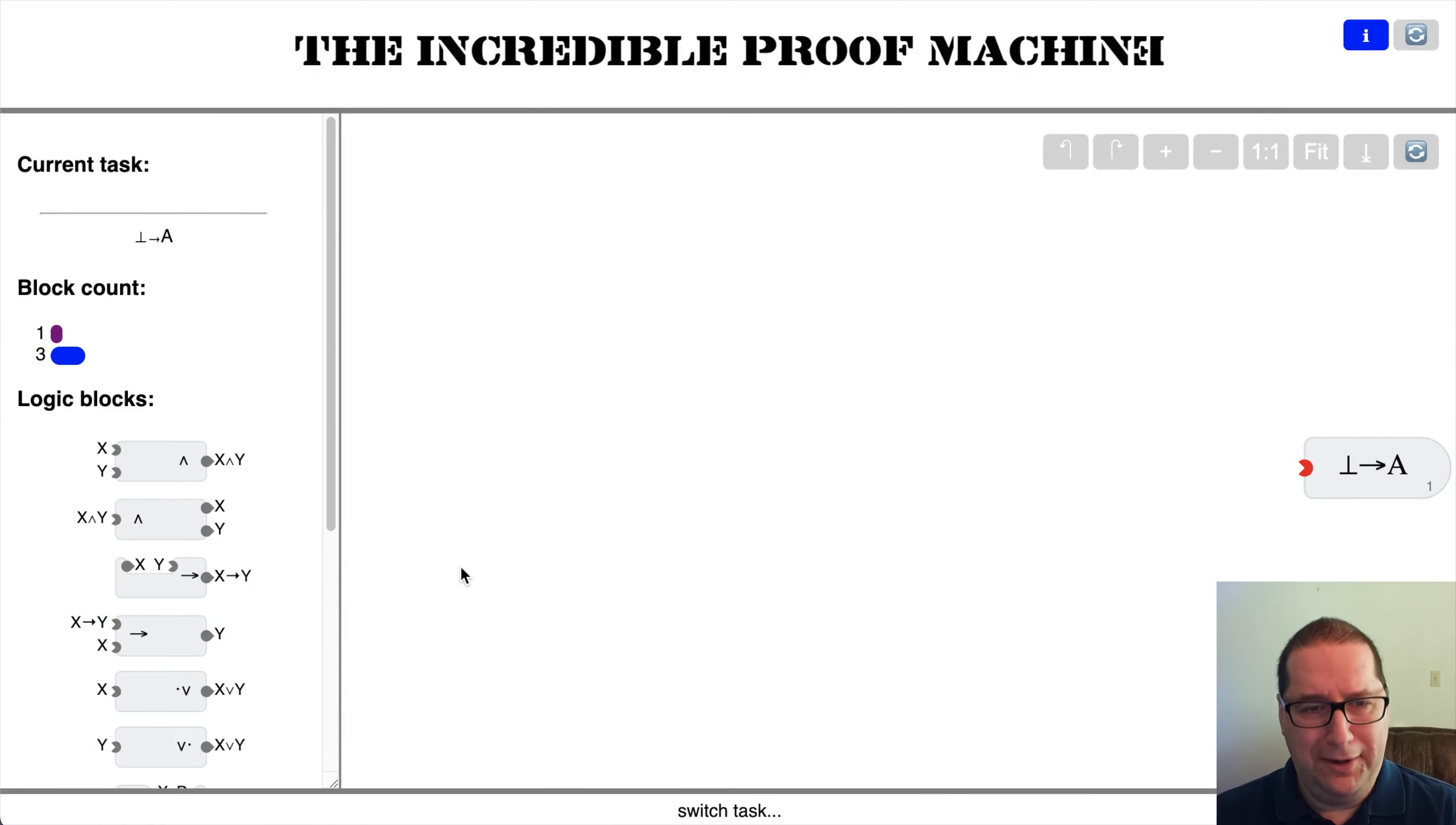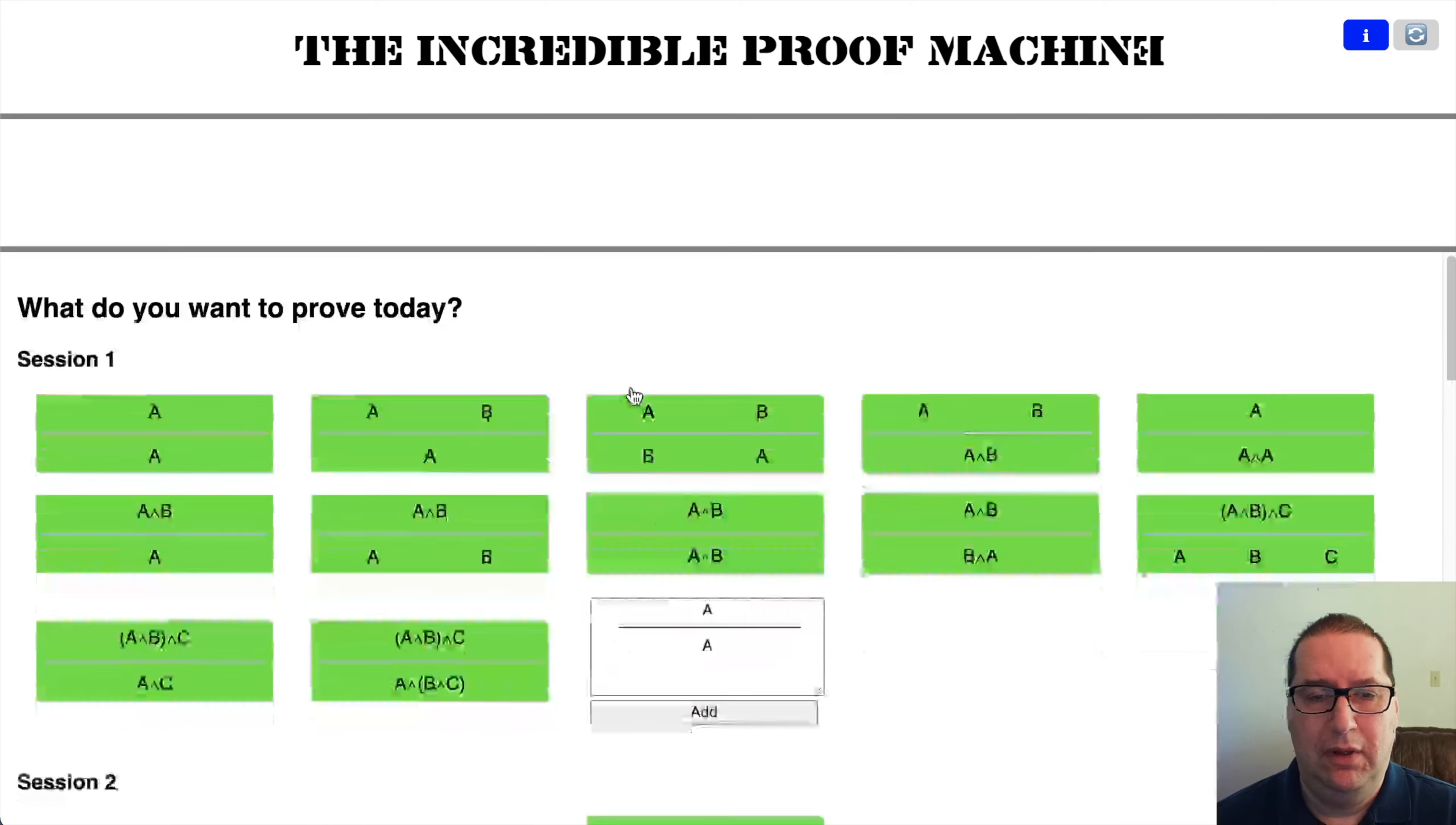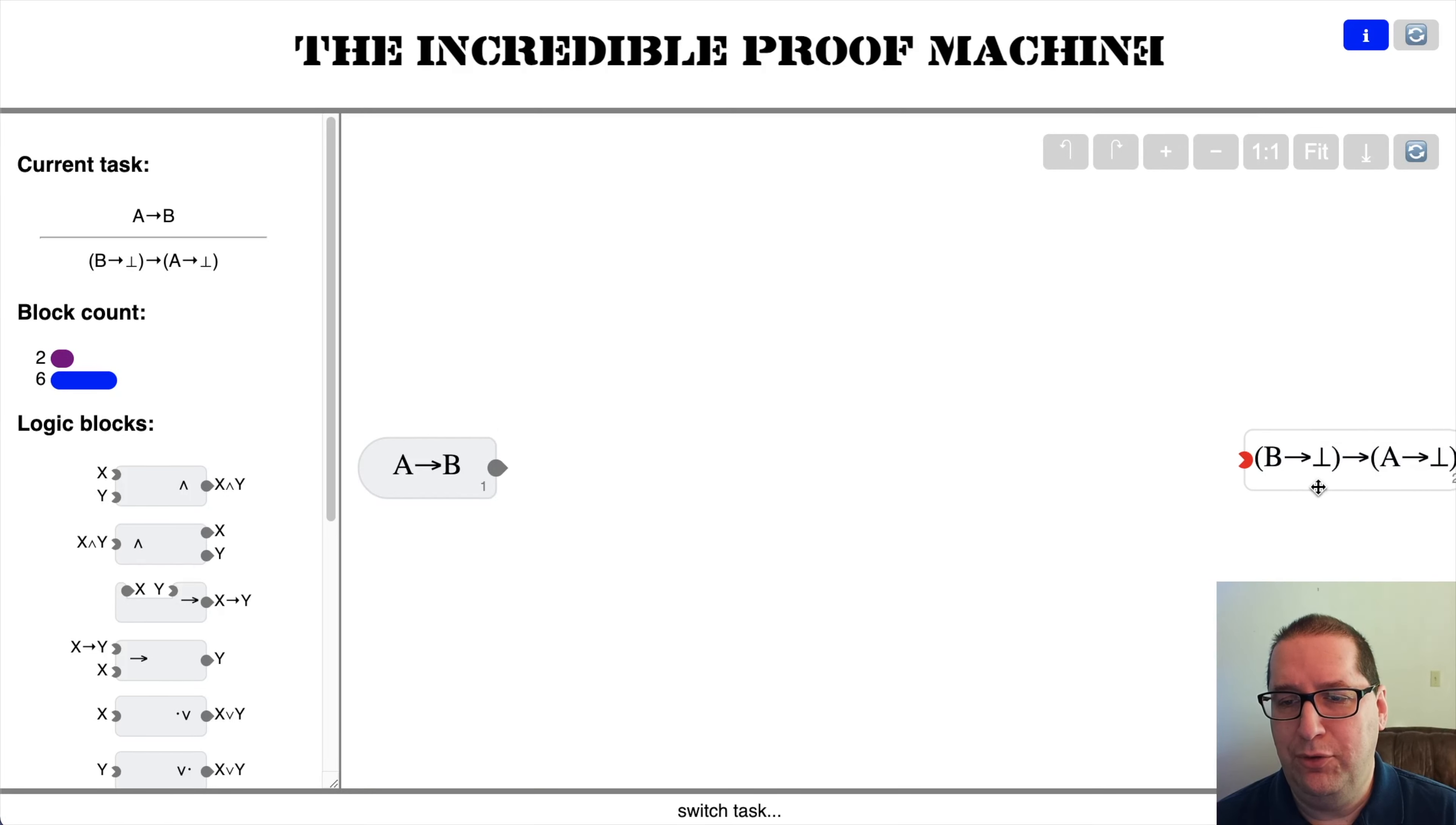Given nothing, prove that absurd implies A. Well, there's an implies there, so we're going to use our implication operator. And we're going to use an absurd block. It's very sus. I don't know, this proving absurd thing, I don't know how I feel about it.